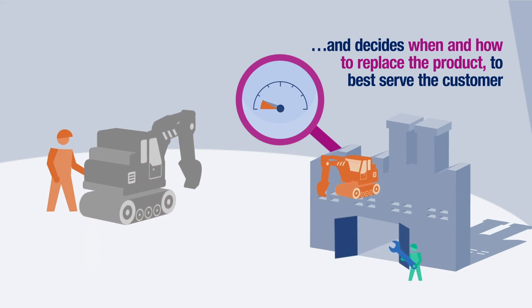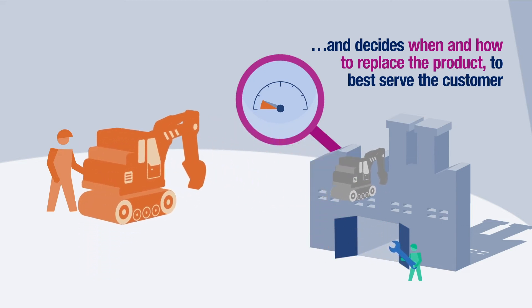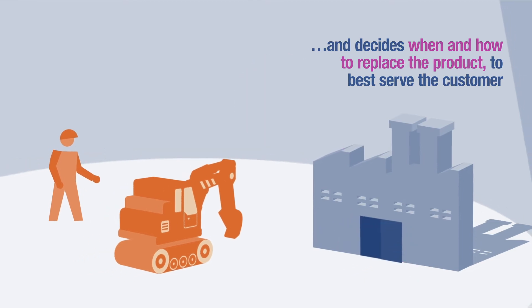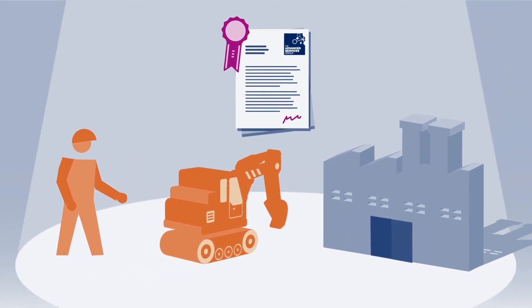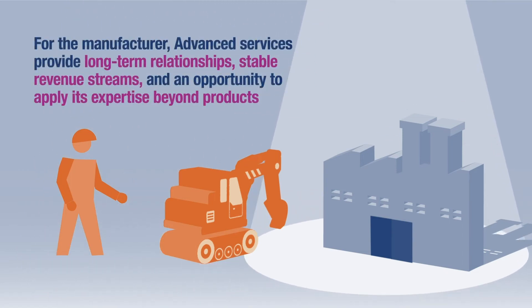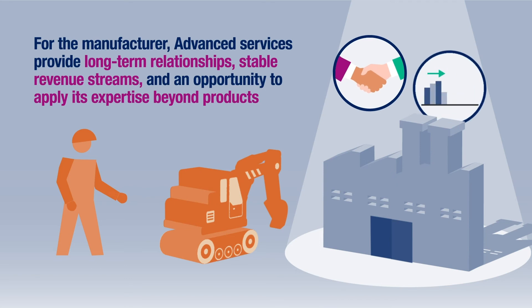It is also the manufacturer who decides when and how to replace the product without interrupting the performance that has been guaranteed to the customer. Advanced services change the relationship between the manufacturer, customer, and product. For the manufacturer, they provide long-term relationships with customers and a stable revenue stream.